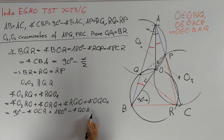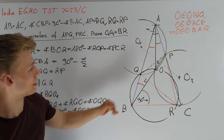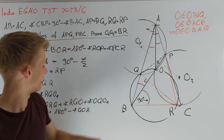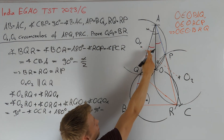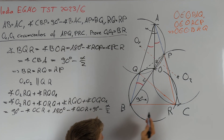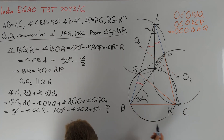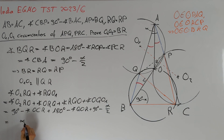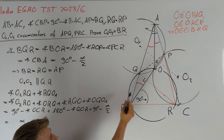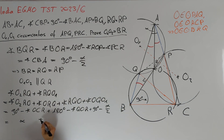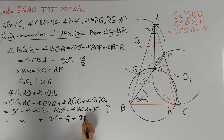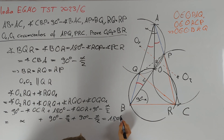Lastly, since O1 is the circumcenter of triangle APQ, angle OQO1 equals 90 degrees minus alpha divided by 2. We know angle OCR equals 90 degrees minus alpha, so the contribution from O2RO is alpha. For 180 degrees minus angle QOR, this equals angle RBQ, so we get alpha plus (90 degrees minus alpha divided by 2), which equals 90 degrees minus alpha divided by 2. In total this gives exactly 180 degrees, and therefore we are done.